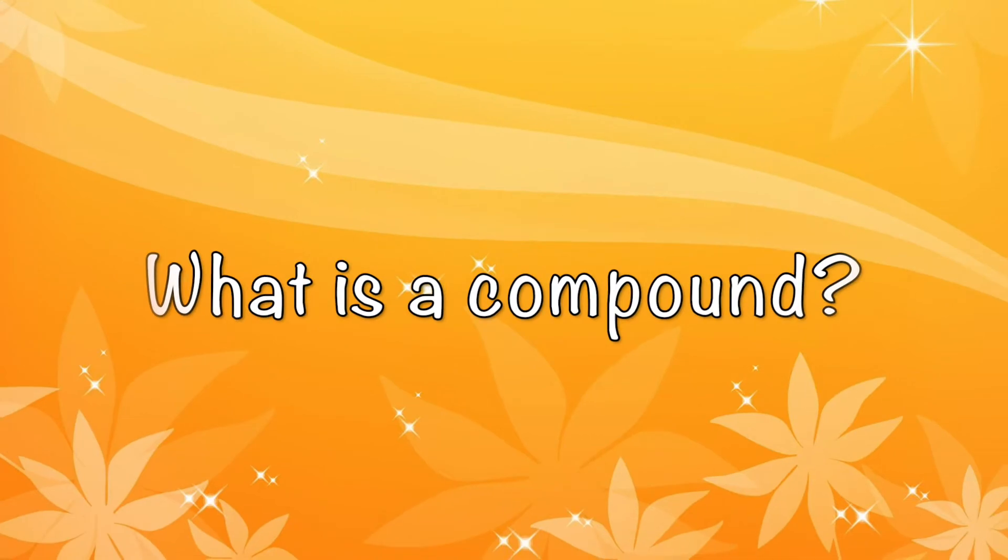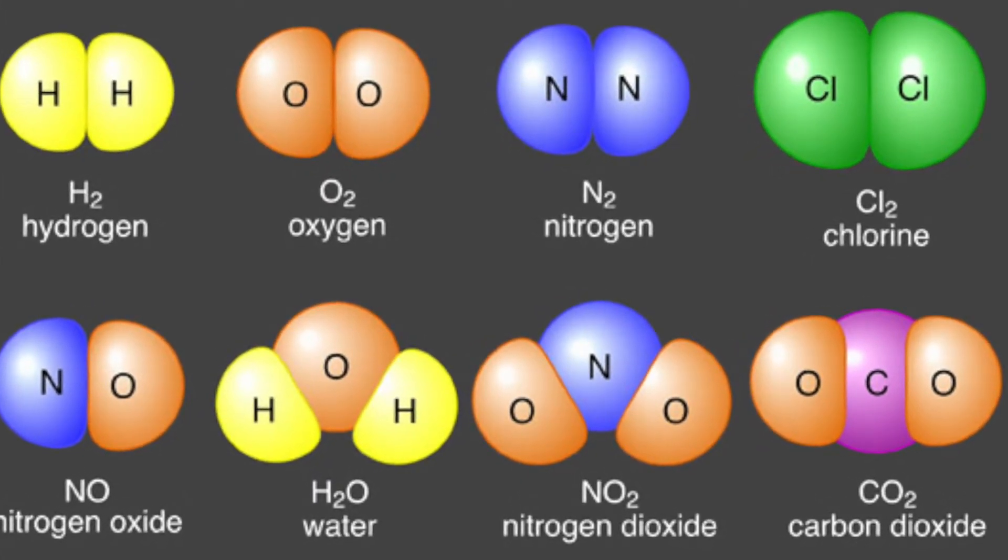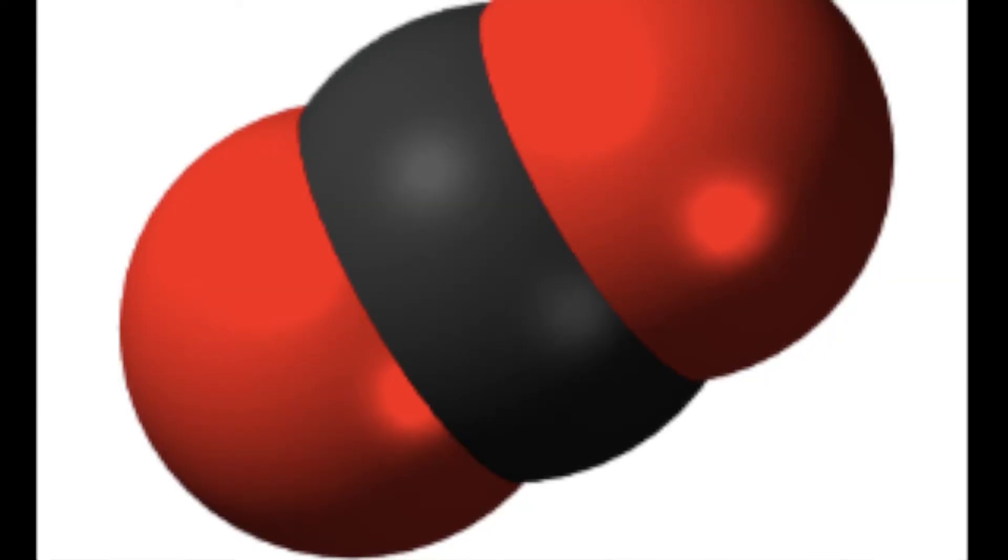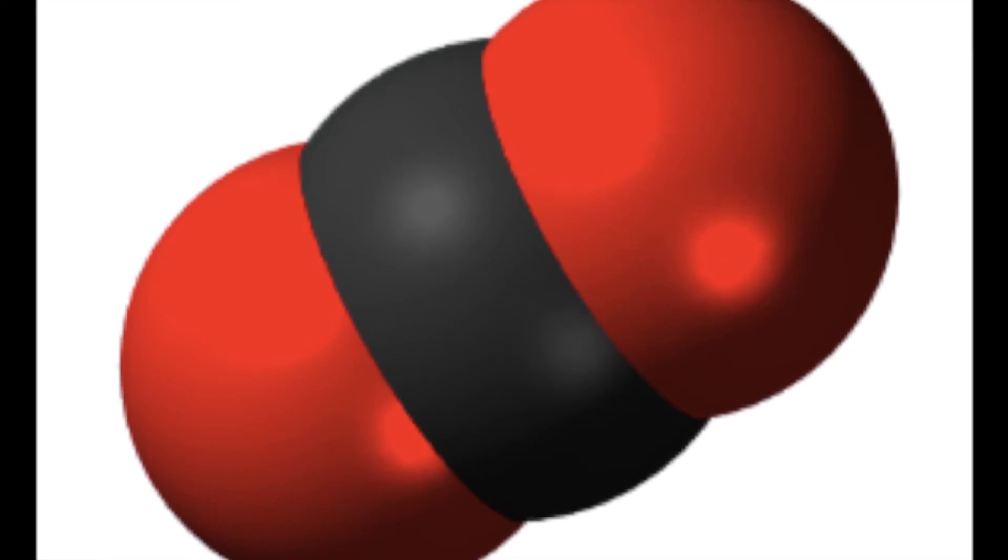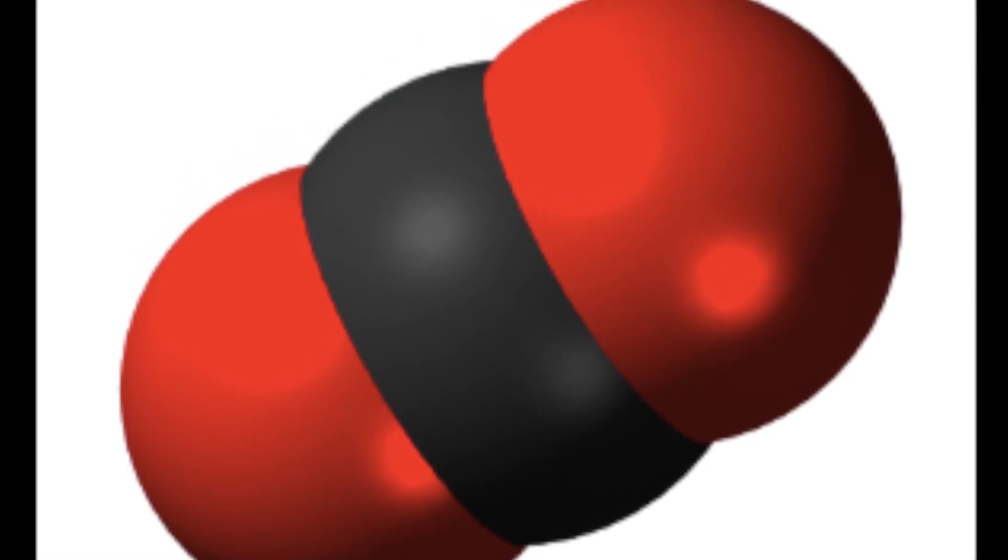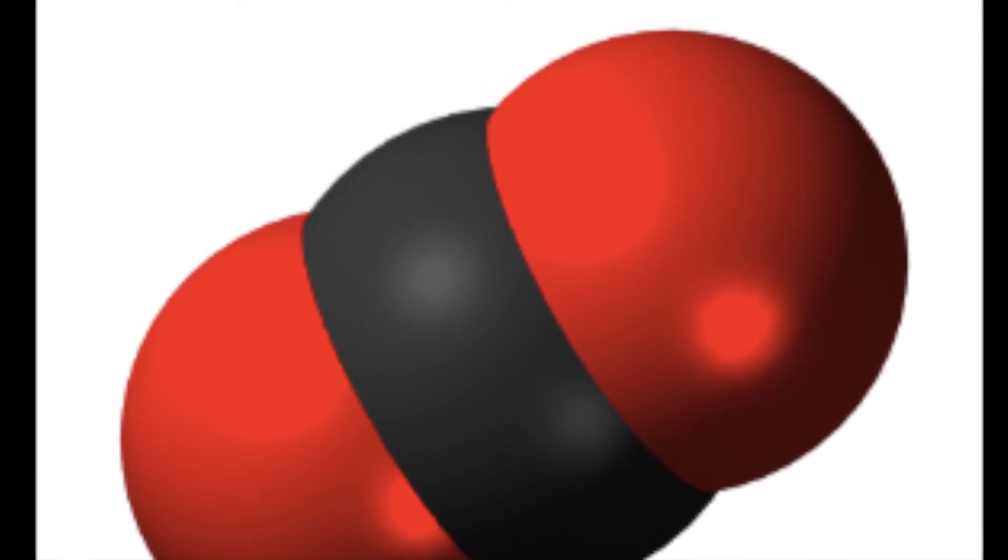What is a compound? A compound is a unique substance that forms when two or more elements combine chemically. For example, the compound carbon dioxide forms when one atom of carbon, gray in the model here, combines with two atoms of oxygen, shown as red in this model.